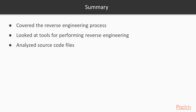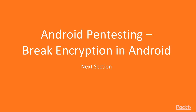In this section we covered: what reverse engineering is and the task information; the tools used — Dex-to-JAR and JD-GUI; how to analyze source code using JD-GUI; and how to find the target file. In the next section, we are going to learn about Android pen testing and breaking encryption in Android. Thank you so much.